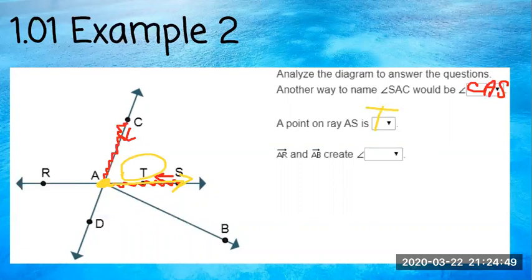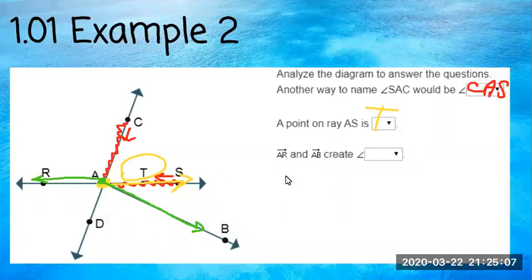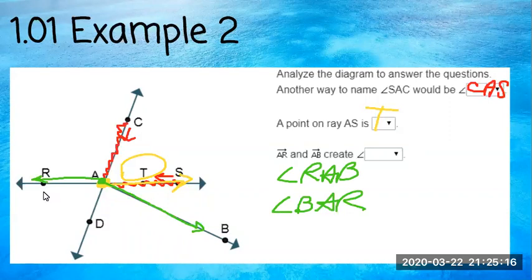Ray AR and ray AB create what angle? There are two ways you could name this angle: angle RAB or angle BAR. If you start at R, go to A, then to B — or start at B, go to A, then to R — both are correct. It doesn't matter which direction you name them.